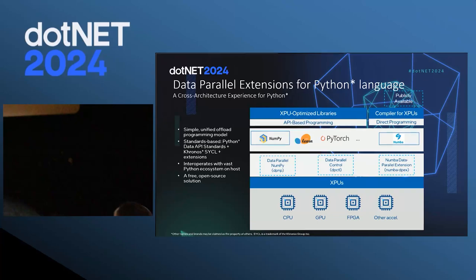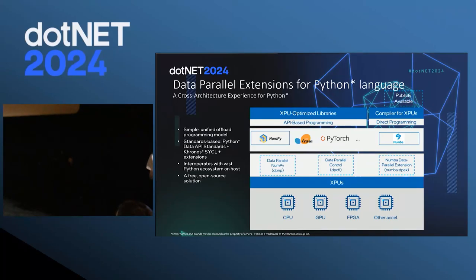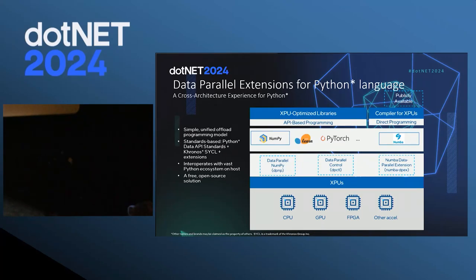Then you have Data Parallel Control — it gives you more control when working with heterogeneous devices like CPUs and GPUs, making sure memory is used efficiently, without having to go to SYCL or lower-level code. On the other side is Numba DpEx. Numba is a just-in-time compiler — Python is not famous for the best performance, and Numba is a compiler that helps improve it. Traditional Numba only supports CPUs, but there's a huge advantage in doing it on GPU, and so with Numba DpEx you can do it on GPUs as well.